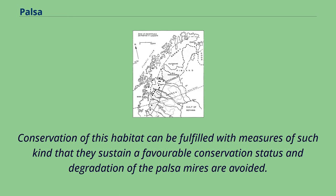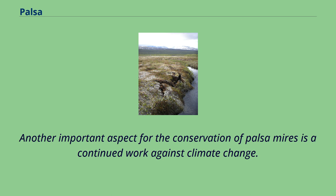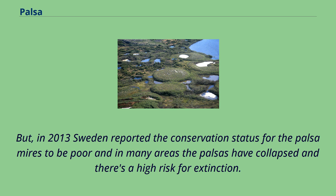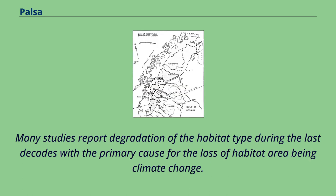Conservation of this habitat can be fulfilled with measures that sustain a favorable conservation status and avoid degradation of the palsa mires. Another important aspect for the conservation of palsa mires is continued work against climate change. But in 2013, Sweden reported the conservation population status for the palsa mires to be poor, and in many areas the palsas have collapsed and there is a high risk for extinction. Many studies report degradation of the habitat type during the last decades, with the primary cause for the loss of habitat area being climate change.